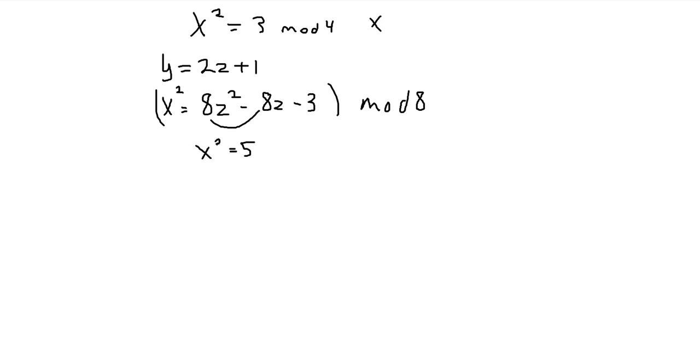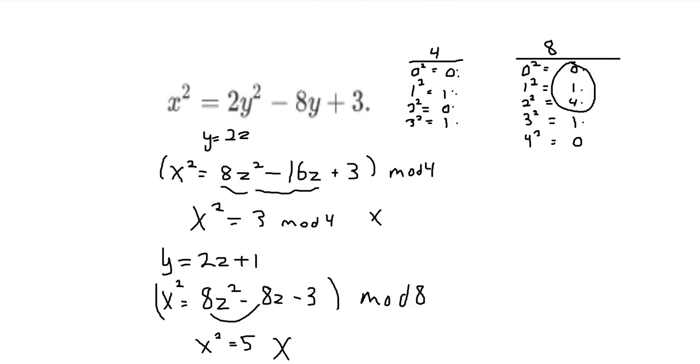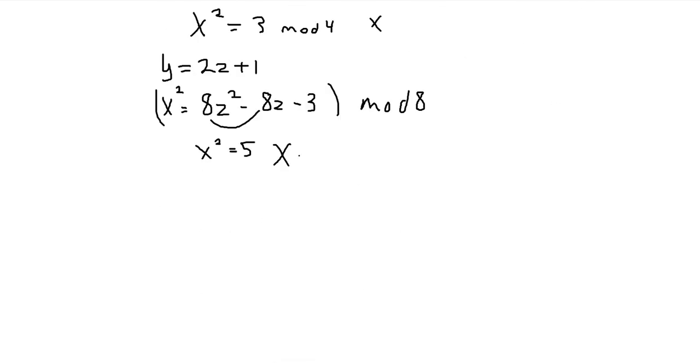So what we get is that x squared is equal to 5. But this is another contradiction, because a square mod 8 can only be 0, 1, or 4. It cannot be 5.